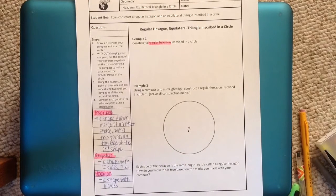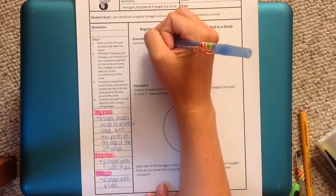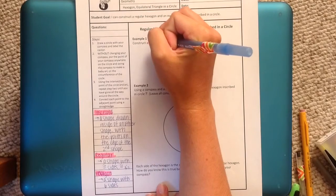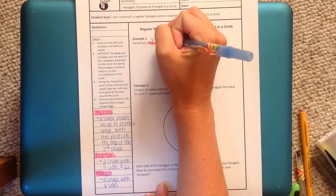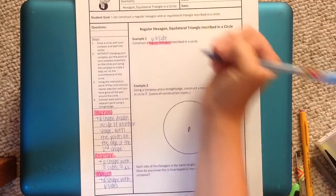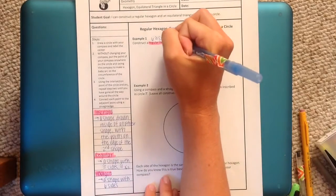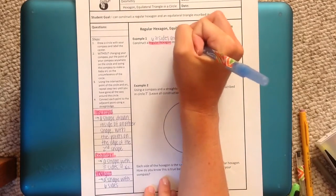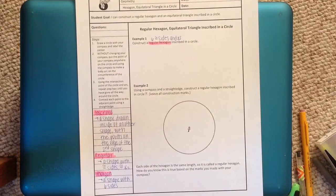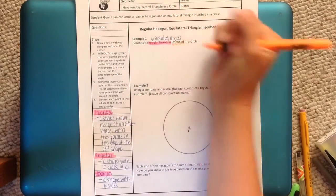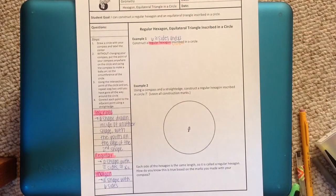So if we take those two words, regular and hexagon, and put them together, that means that we have a six-sided figure with congruent sides and angles. I'm going to condense that by saying six congruent sides and angles. So it needs to be inscribed in a circle, which means that we have to first make a circle.